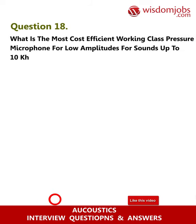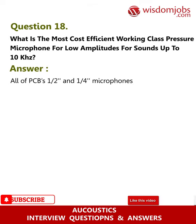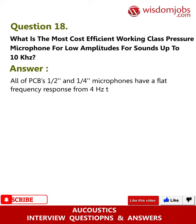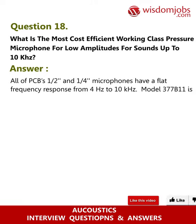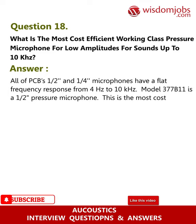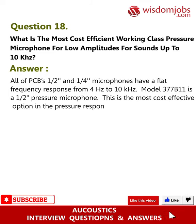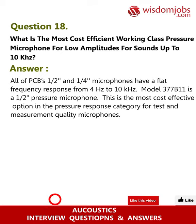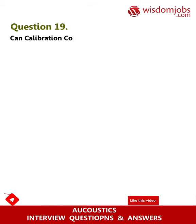Question 18: What is the most cost-efficient working class pressure microphone for low amplitudes for sounds up to 10 kilohertz? Answer: All of PCB's half and one-quarter inch microphones have a flat frequency response from 4 Hz to 10 kilohertz. Model 377B11 is a half-inch pressure microphone and is the most cost-effective option in the pressure response category for test and measurement quality microphones.